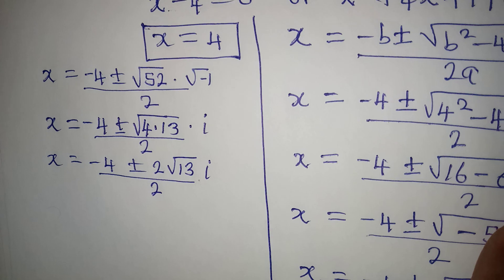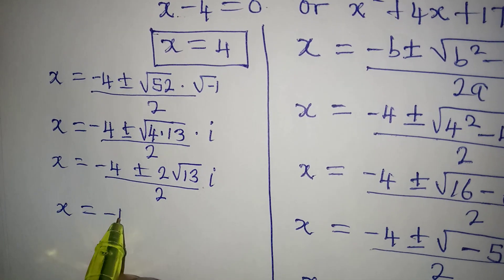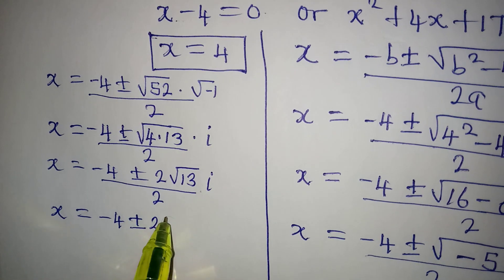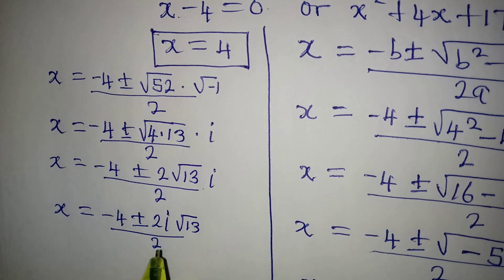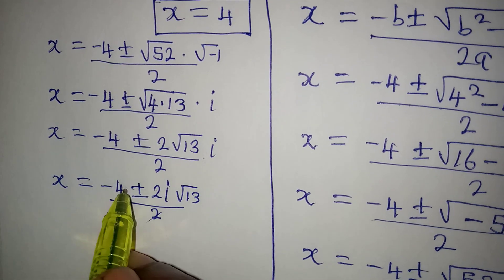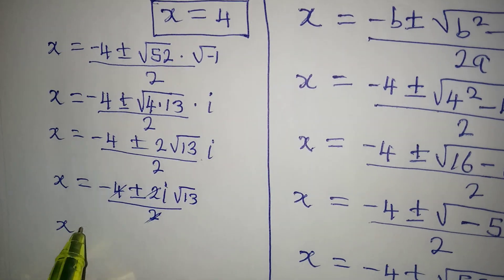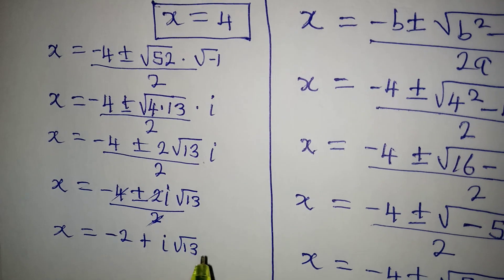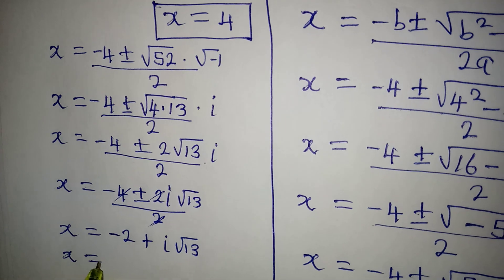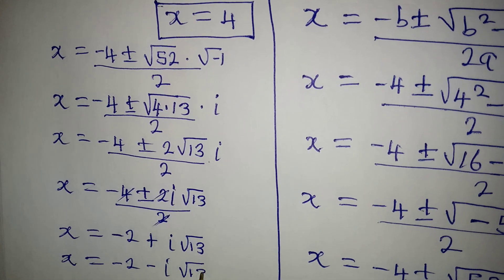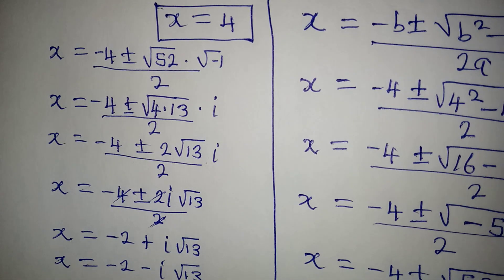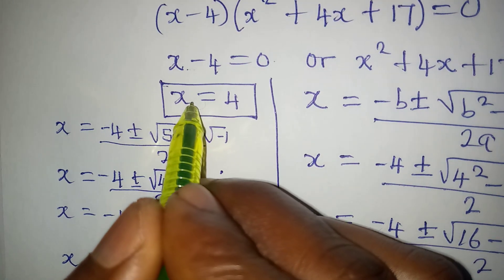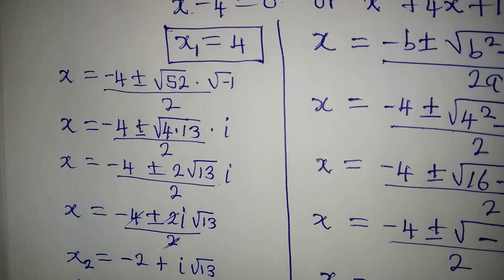We can rearrange this: x equals minus 4 plus or minus 2i square root of 13, over 2. Dividing through by 2, we get x equals minus 2 plus i square root of 13, and x equals minus 2 minus i square root of 13. These are the other two complex solutions, which we can call x2 and x3.